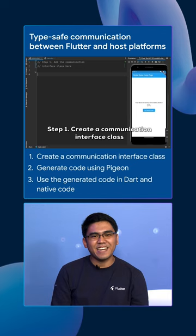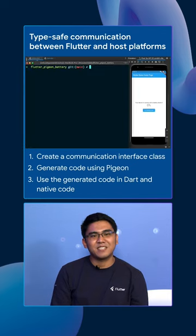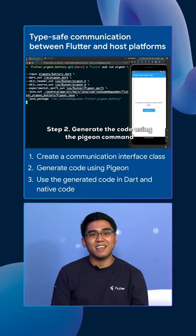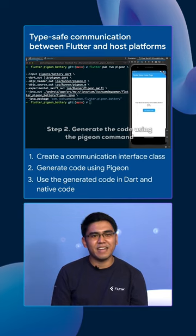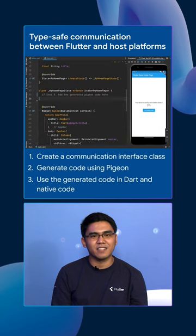First, create an interface that defines your communication method. Next, use Flutter Pigeon to generate the code. Lastly, use the generated code in Dart and the native code to set up the platform channel.